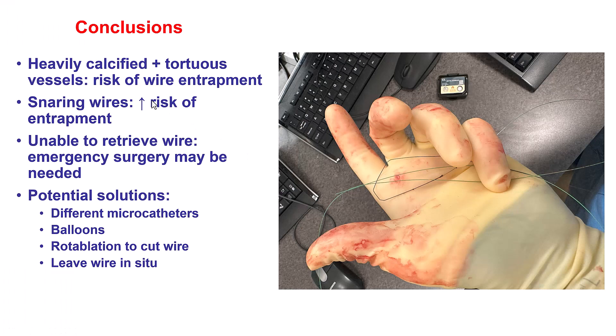There are several lessons from this case. The first is that when doing intervention through a tortuous and calcified vessel, there is always an increased risk of equipment entrapment, especially when equipment is externalized. When we get a wire stuck, there are different ways to try to release it — getting microcatheters all the way down and then pulling until it snaps — but this wire would not be retrieved. If the wire cannot be retrieved and it is in the aorta, then emergency surgery may be needed, as in our case.